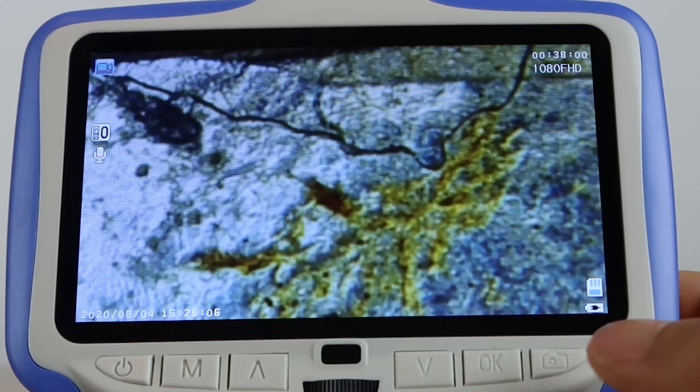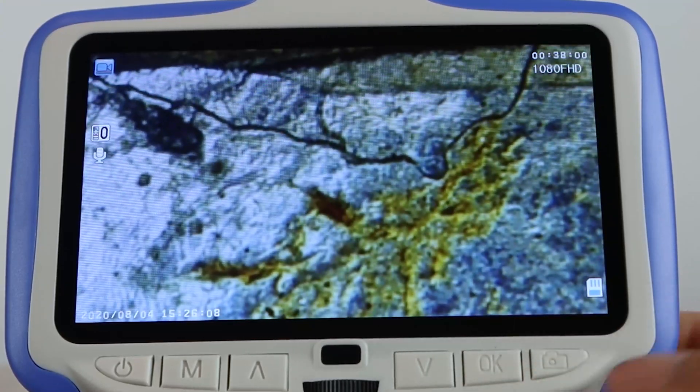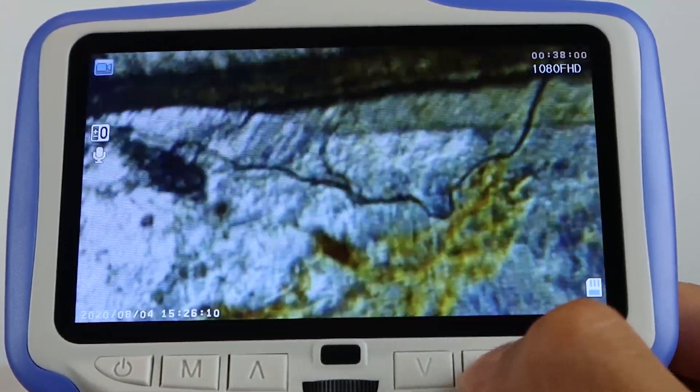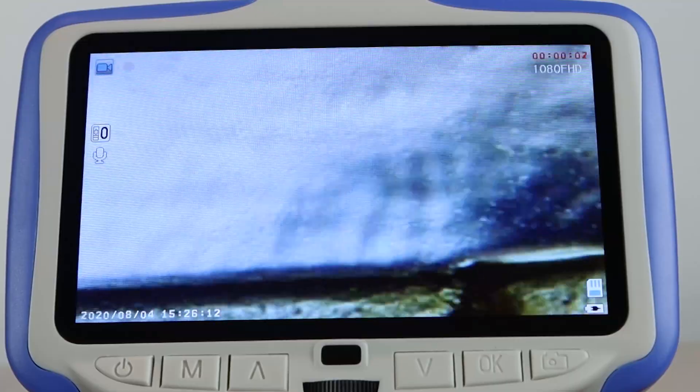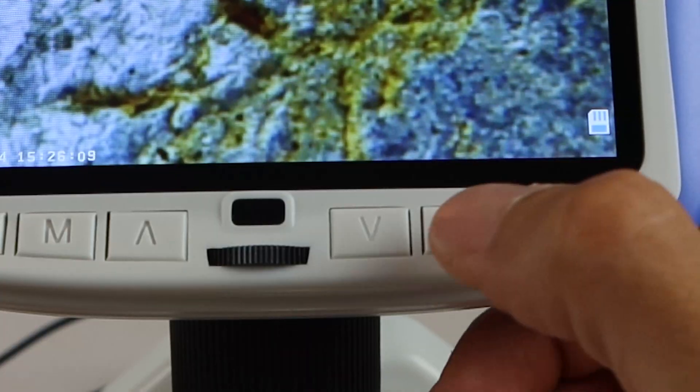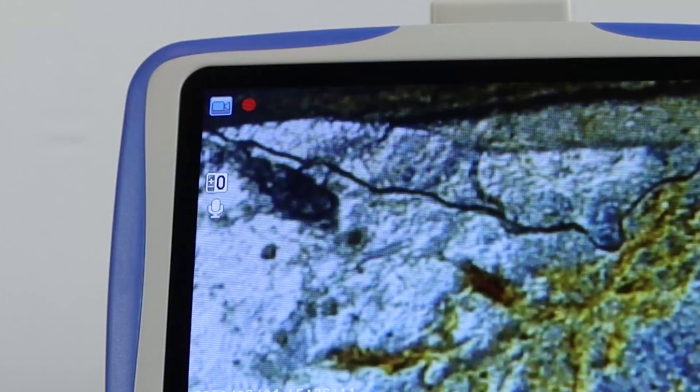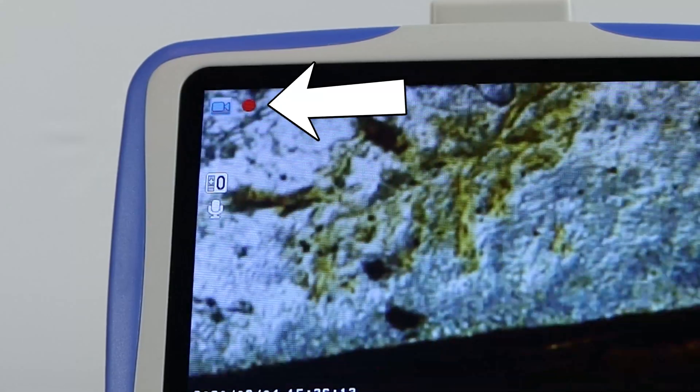It's important to note that the photo button doesn't actually do anything when you push it. To take a photo or video of what's happening on the screen, you actually have to press the OK button. And now you can see, in video mode, that it is recording.